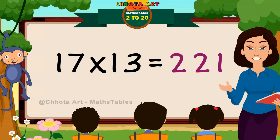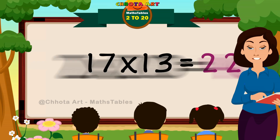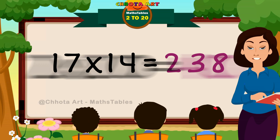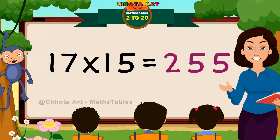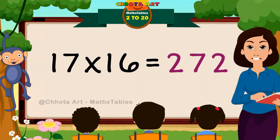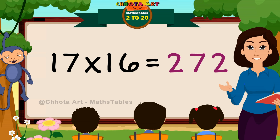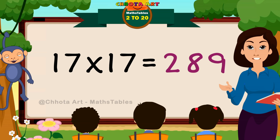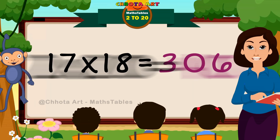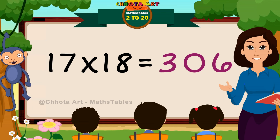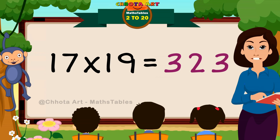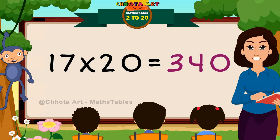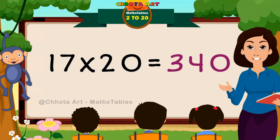17×12 is 204. 17×13 is 221. 17×14 is 238. 17×15 is 255. 17×16 is 272. 17×17 is 289. 17×18 is 306. 17×19 is 323. 17×20 is 340.